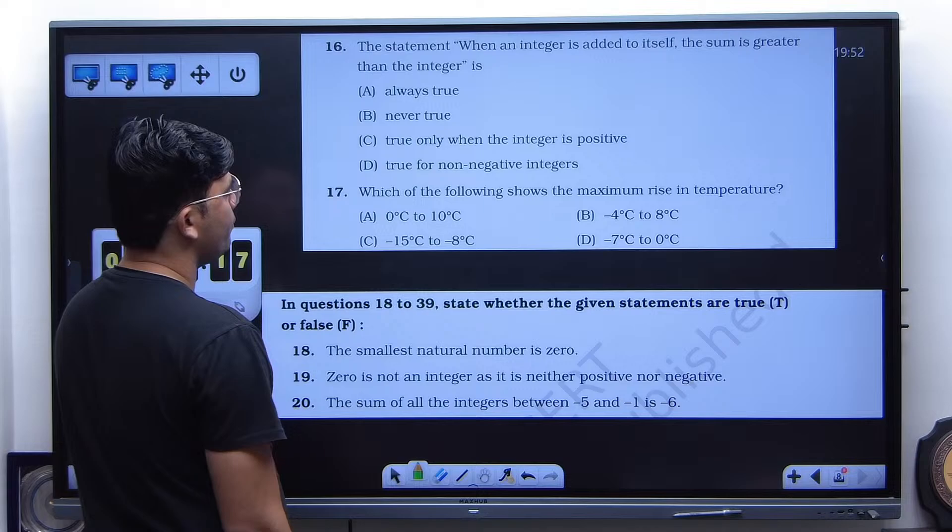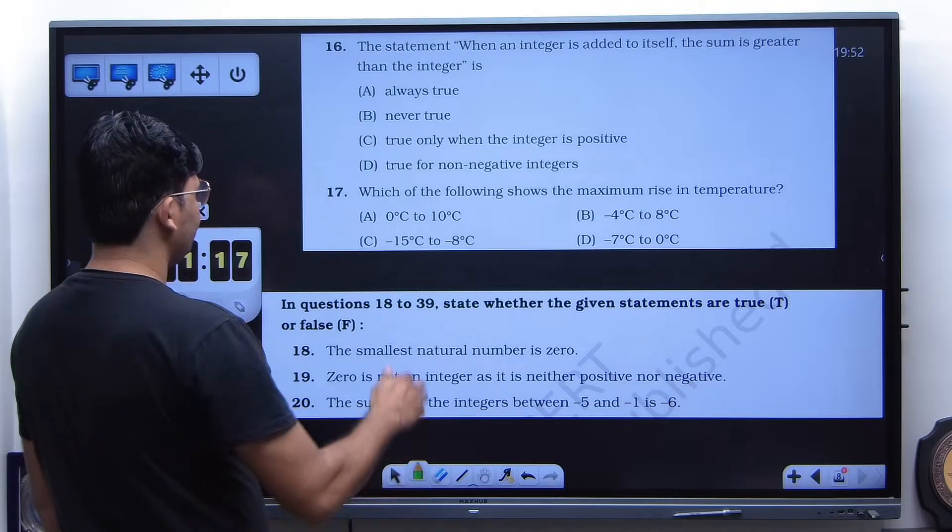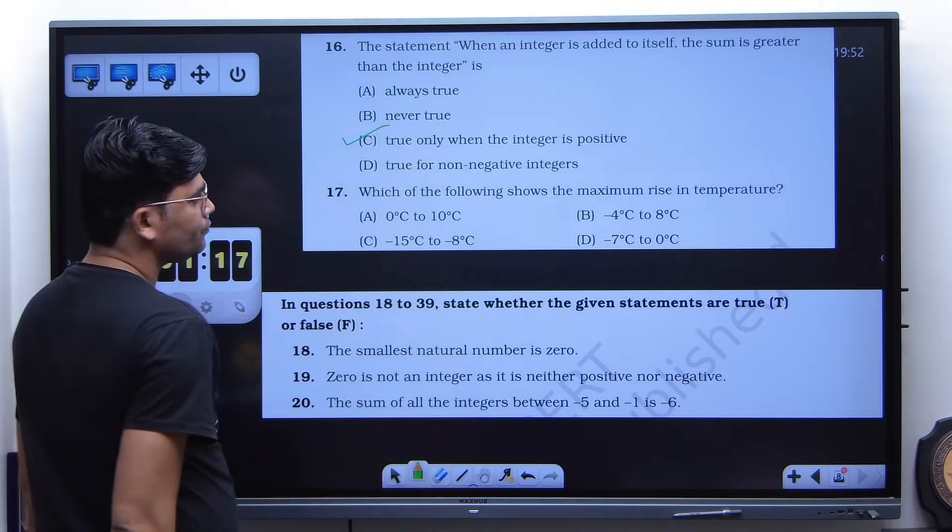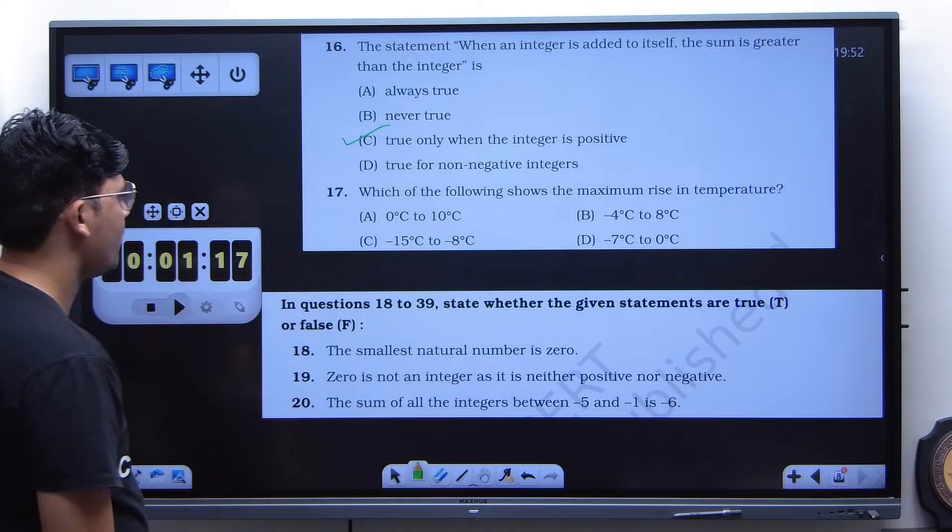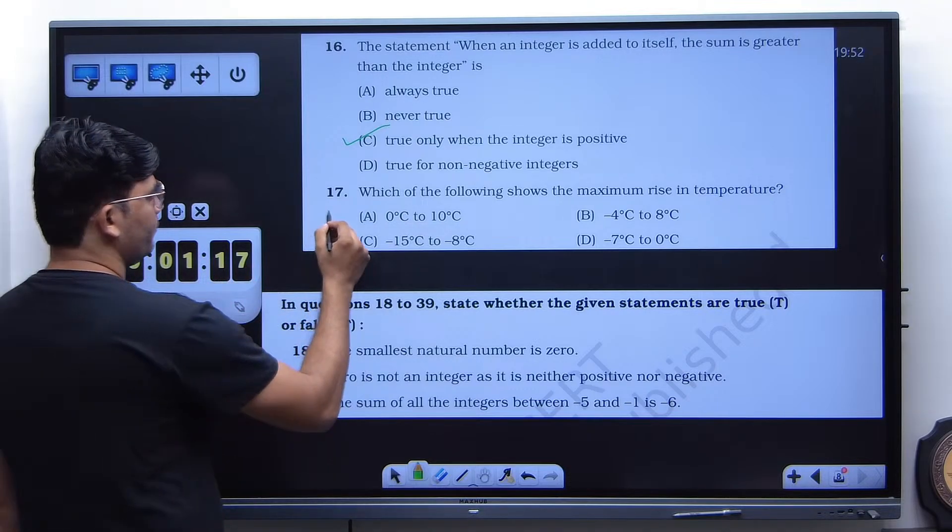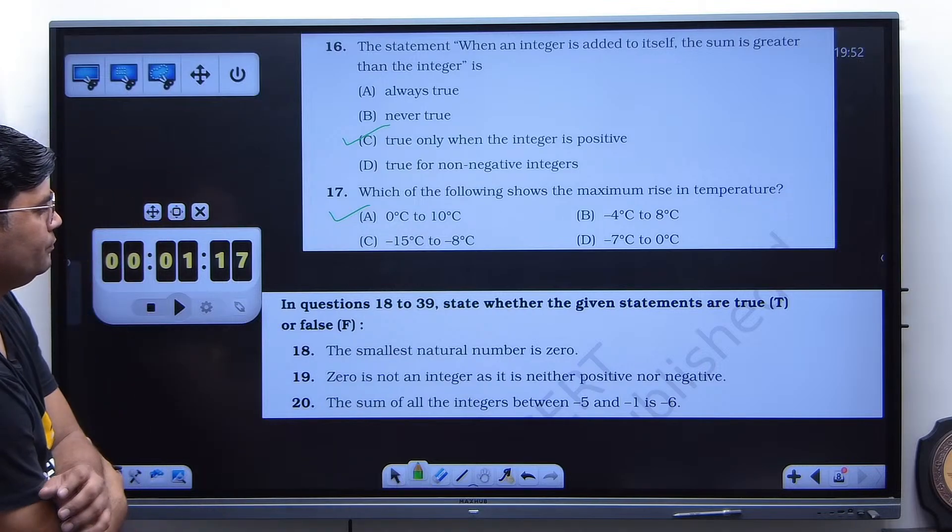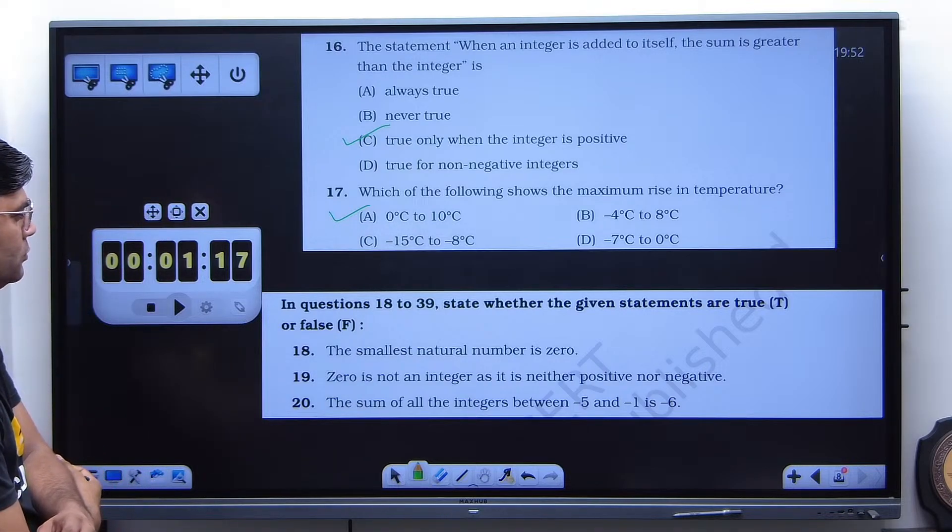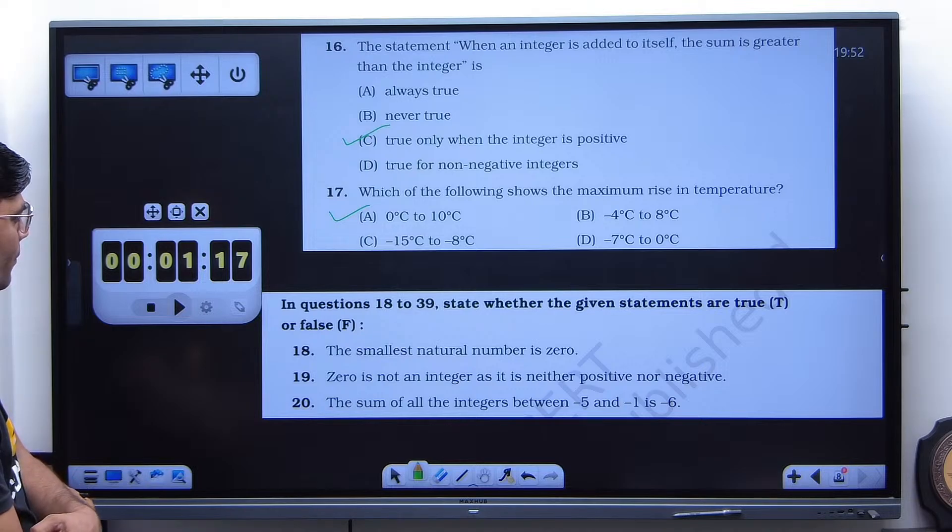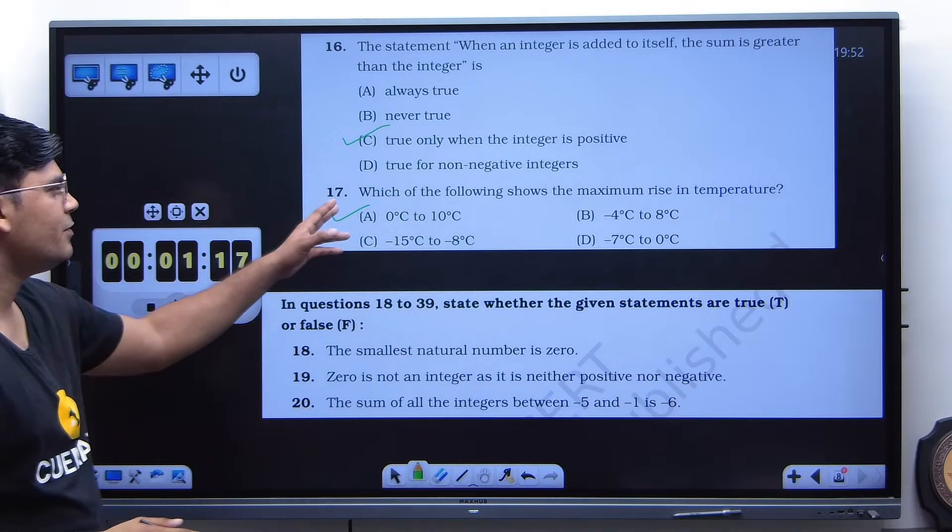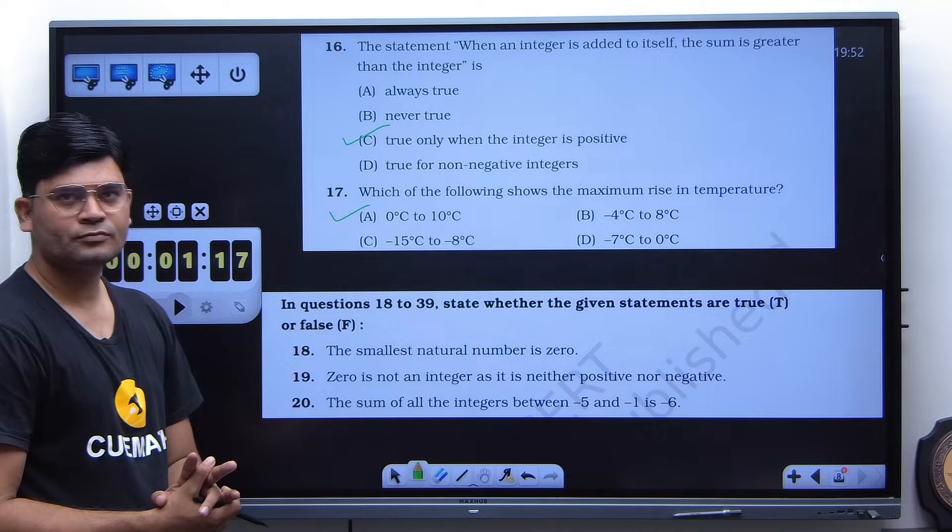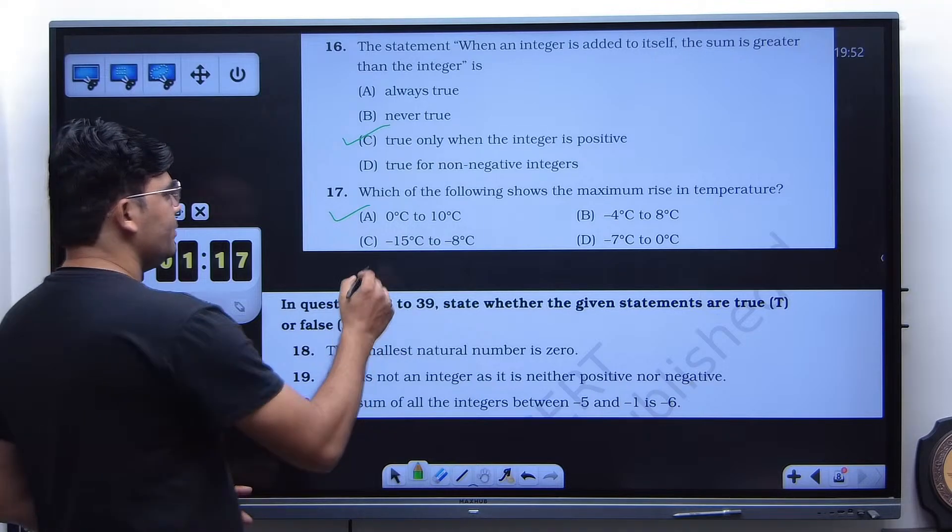The first one is C, true only when the integer is positive. And then next one is A. And the rest three are false. For 17th you said A.